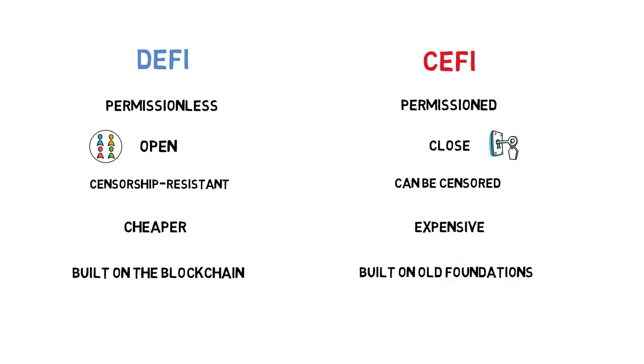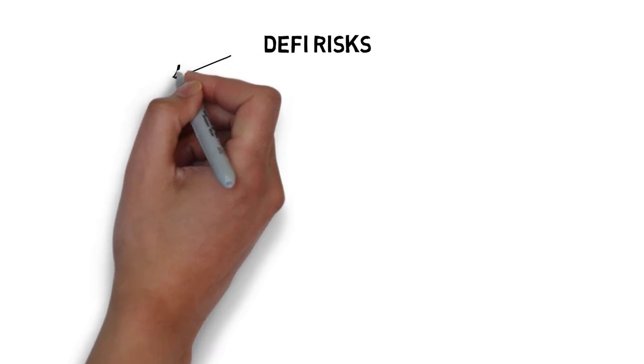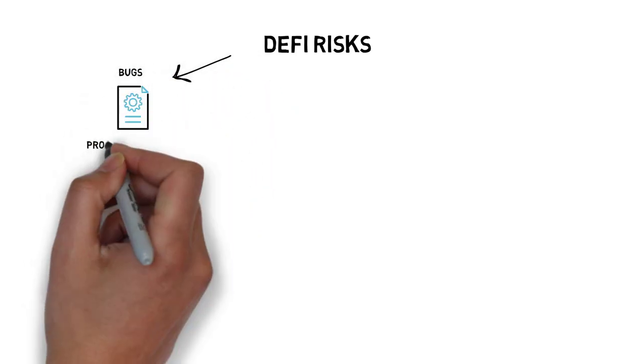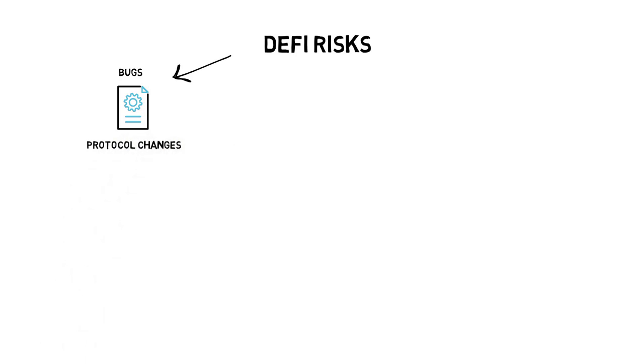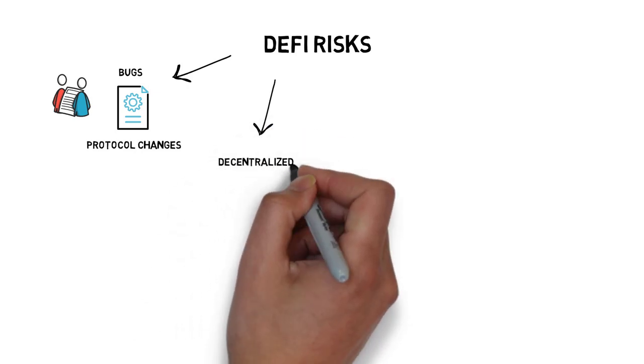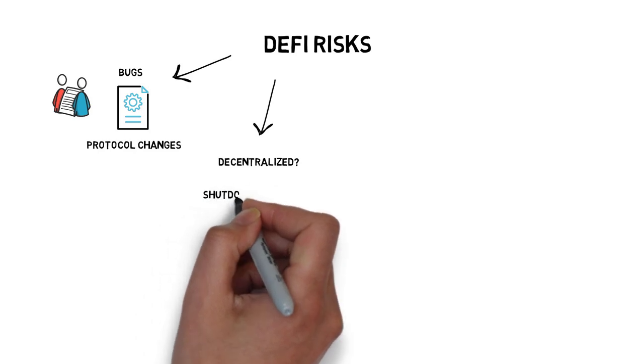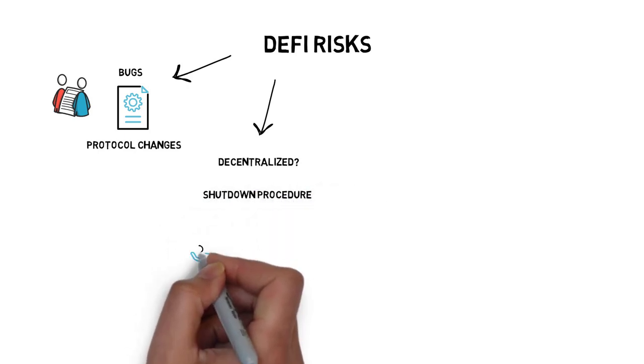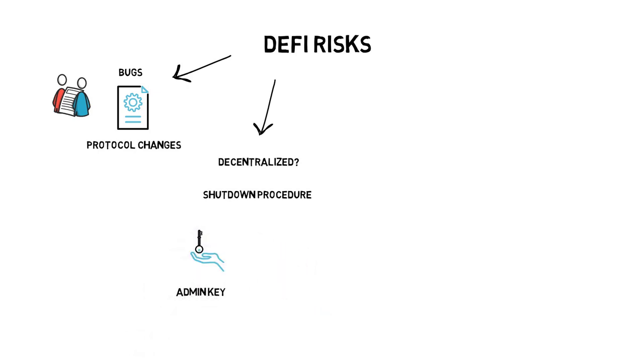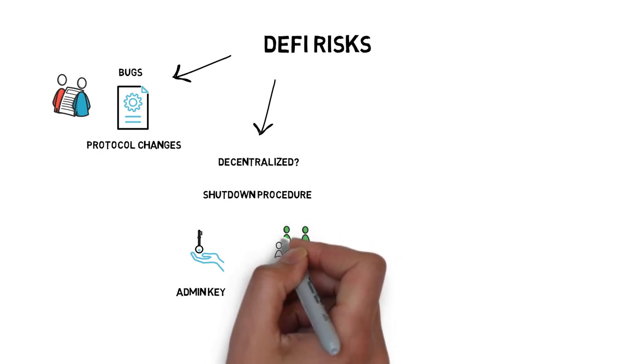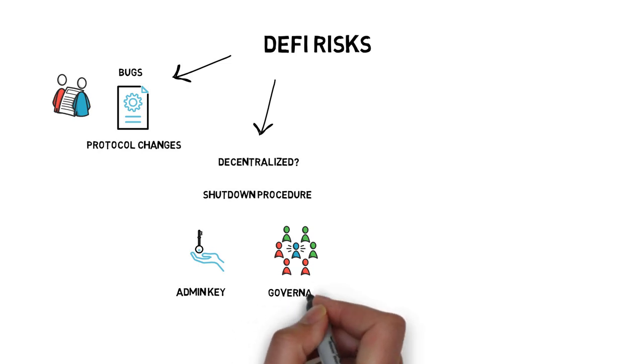Before we wrap up this video, we have to also mention the potential risks associated with DeFi. One of the main risks are bugs in smart contracts and protocol changes that can affect the existing contracts. We described them in more details in the previous video about smart contracts. This is also when users can take additional insurance to lower the risk of potential issues. Besides that, we always have to check how decentralized a DeFi project really is and what is the shutdown procedure if something goes wrong. Does someone have an admin key that can be used to shut down the protocol? Or maybe there is some on-chain governance in place to make such a decision.